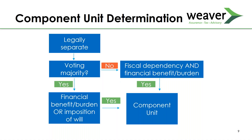The path to component unit determination starts with determining whether we have a legally separate organization. If yes, we determine whether we appoint the voting majority of that organization's governing body. If yes, we then check for a financial benefit or burden relationship or ability to impose our will. If we don't appoint the voting majority, we can still have a component unit by meeting both fiscal dependency and a financial benefit or burden relationship.